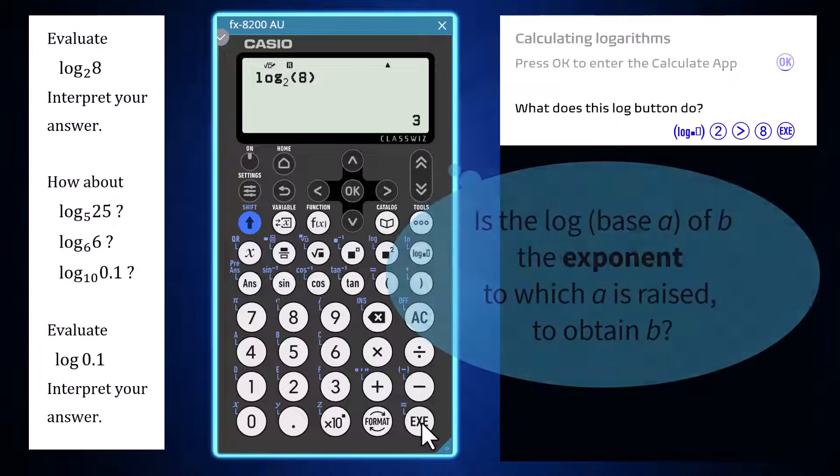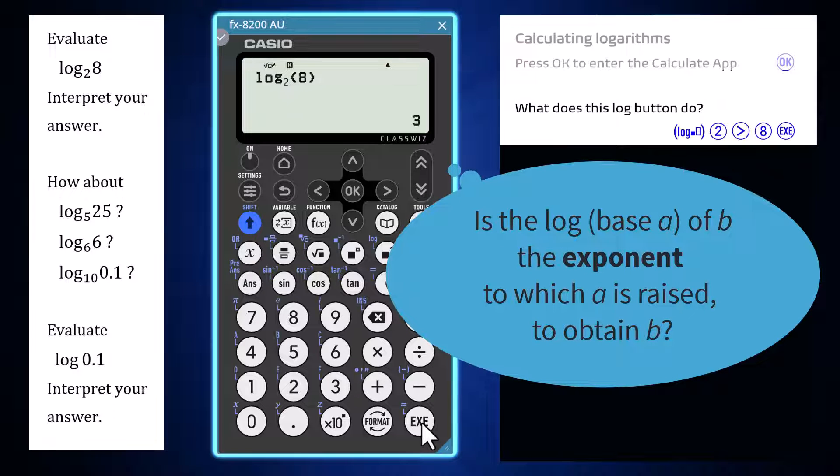Could it be that the log base A of B is the exponent to which A is raised to obtain B? That fits with 2 raised to the power of 3 being equal to 8.